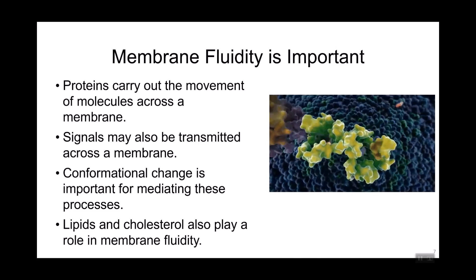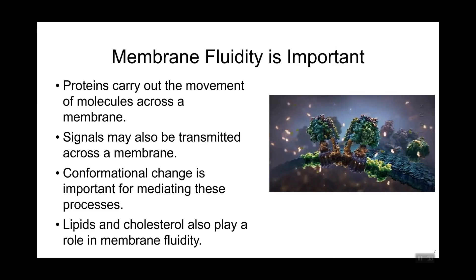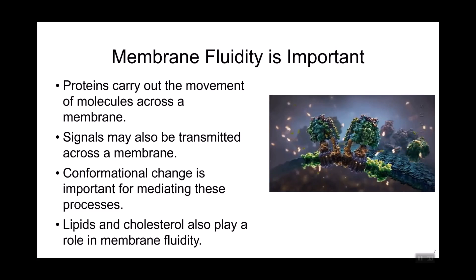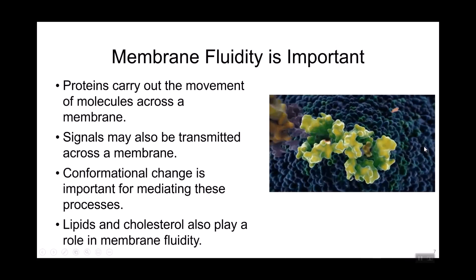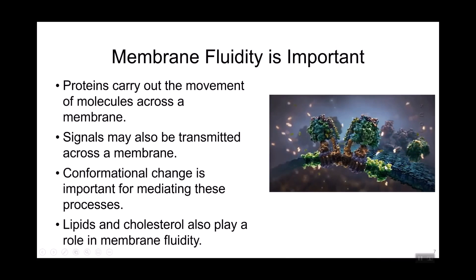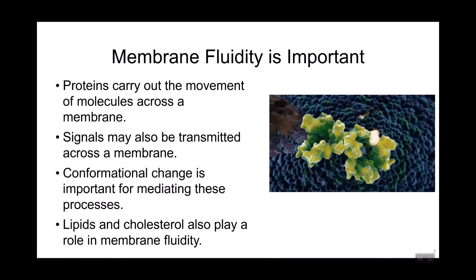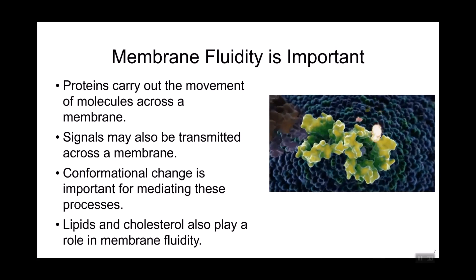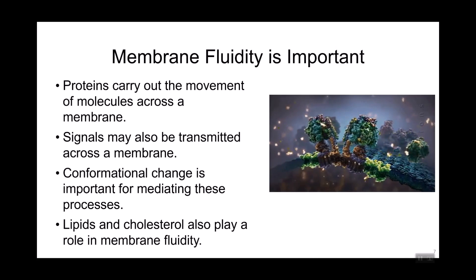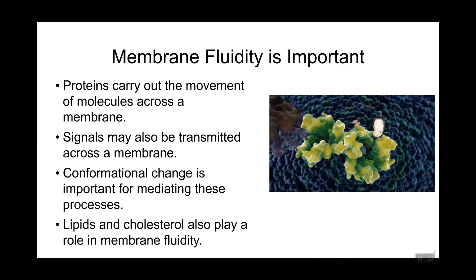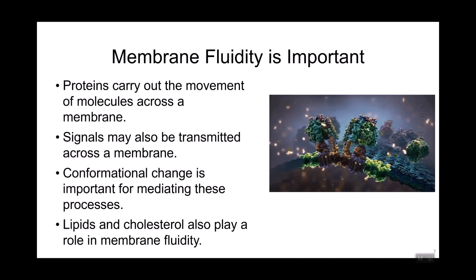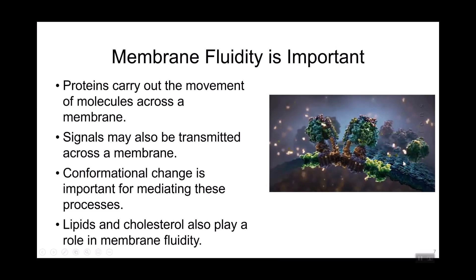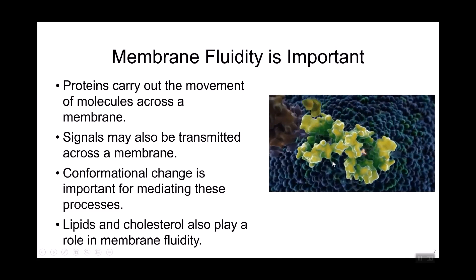Signaling can also involve the binding of proteins to other proteins on either side of the membrane, allowing information to be transmitted from one side to the other without actually moving anything across the bilayer. For proteins in the membrane, the membrane itself needs to be fluid — fluidity means allowing for changes in structure to occur, not frozen in space. We'll look at how lipid and cholesterol structure can contribute to this fluidity, allowing the flexibility for proteins to undergo conformational changes. All of these cellular processes come down to the formation of non-covalent interactions at the molecular level, allowing structures to bind and unbind.